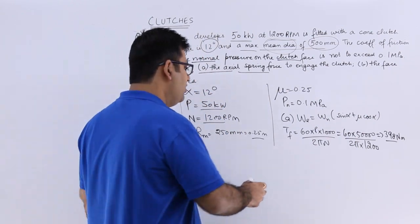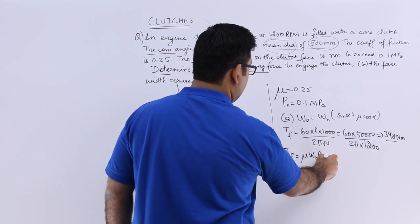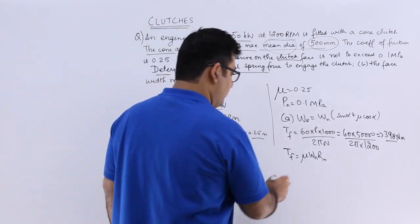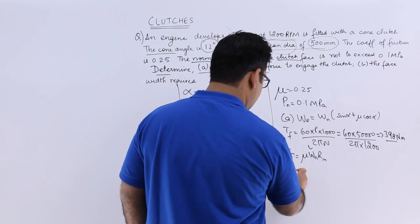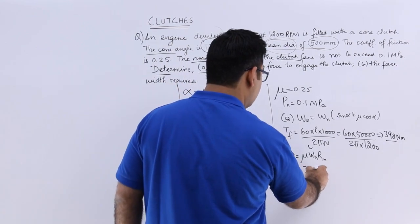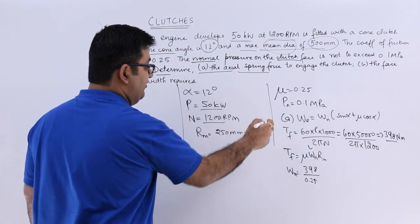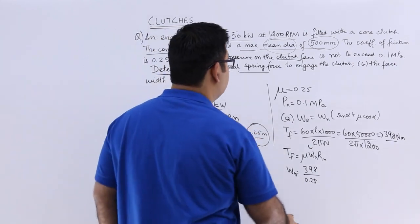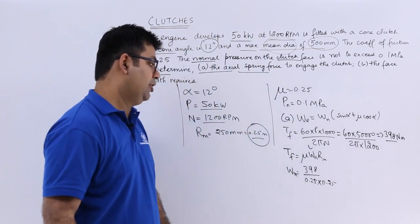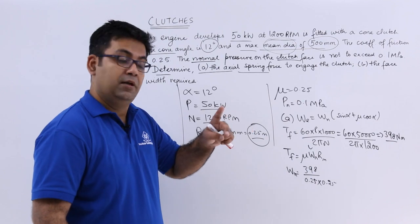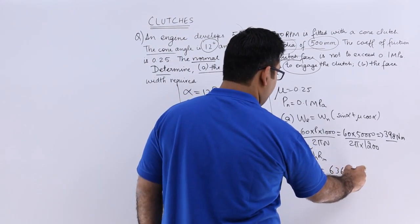Now we know that the value of TF is mu WN into Rm. So from this expression I can find out WN. So WN would be TF which is 398 upon mu which is 0.25 and Rm is 0.25 in meters. So you will get your WN as 6366.4 N.